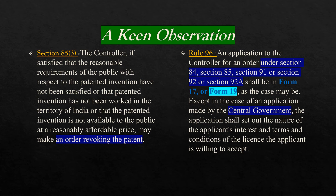Whereas rule number 96 says: an application to the Controller for an order under section 84, 85, 91, 92, or section 92A shall be in form number 17 or form number 19 as the case may be. Except in the case of an application made by the central government, the application shall set out the nature of the applicant's interest and the terms and conditions of the license the applicant is willing to accept.